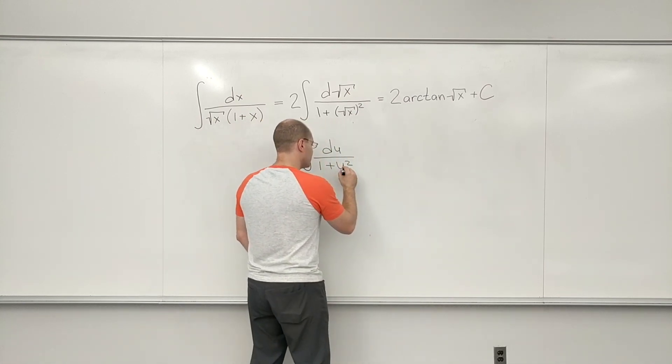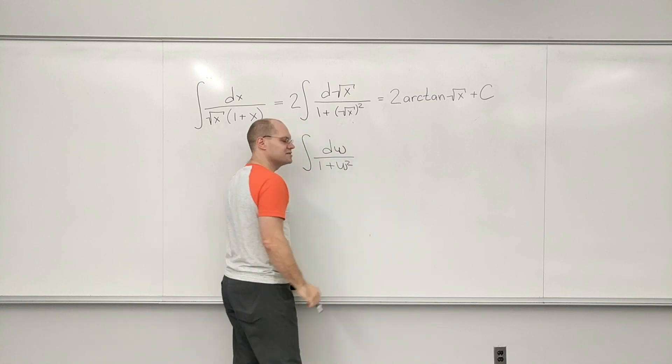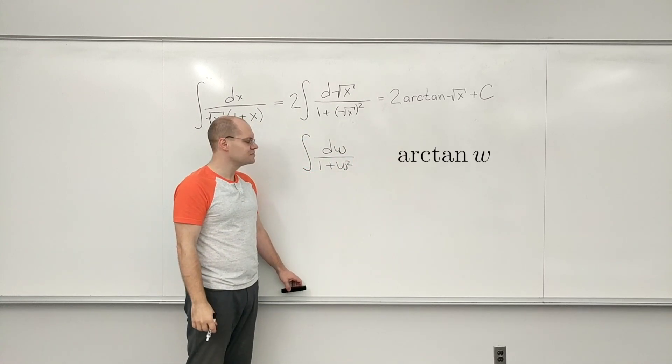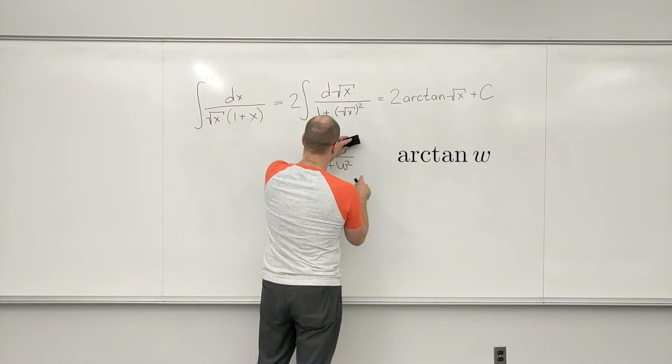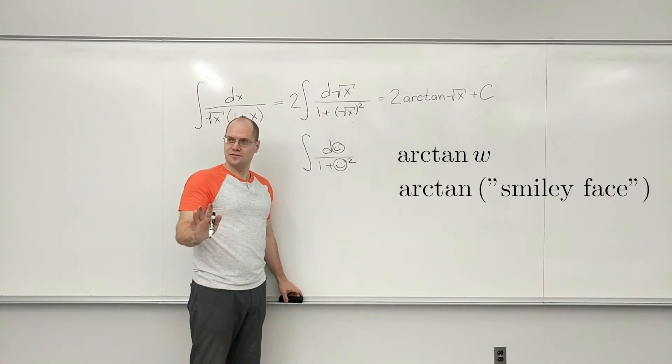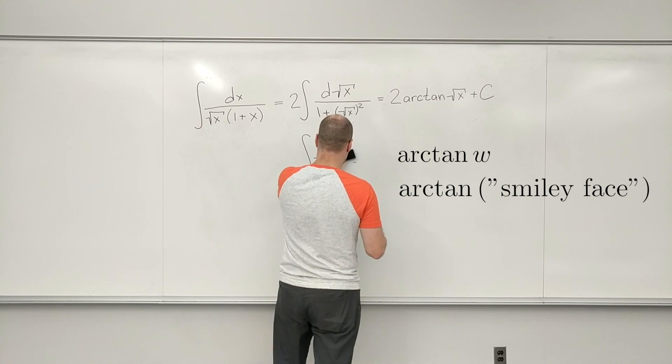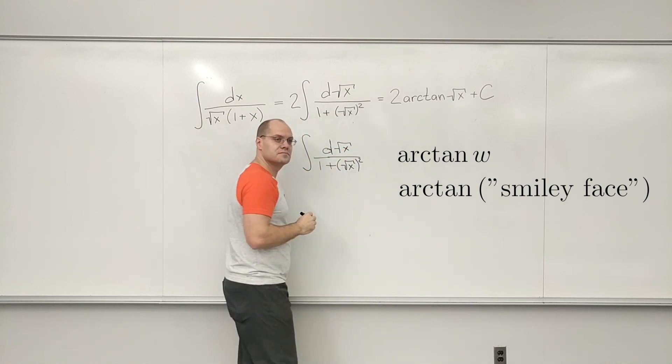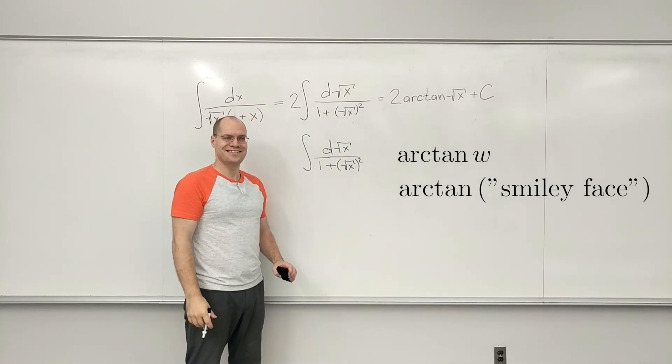What about this? What is this? That's a w. Arc tan of u. Okay, what is this? You agree? What about this? Okay, convinced? Good.